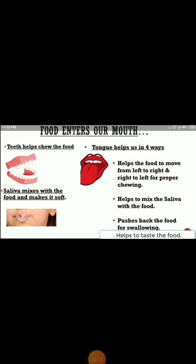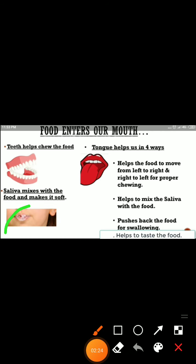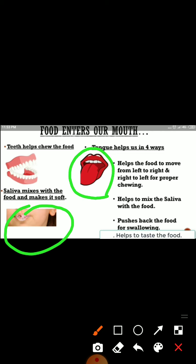First, teeth help to break the food. Then saliva mixes with the food and makes it soft. Saliva makes the food soft and easier to process. Then there is the tongue, which helps you in digestion in four ways.